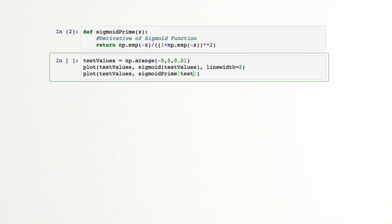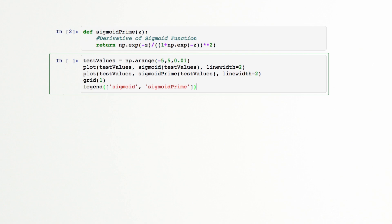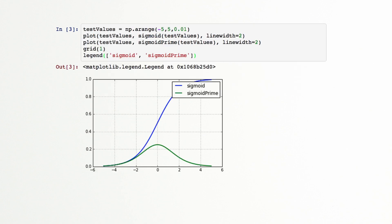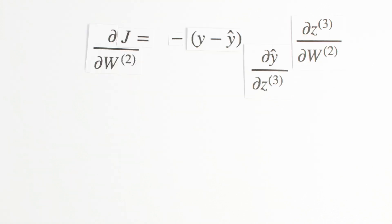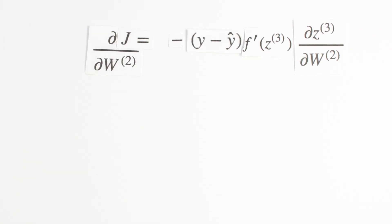Our derivative should be largest where our sigmoid function is the steepest, at the value z equals 0. We can now replace dy hat dz3 with f prime of z3.